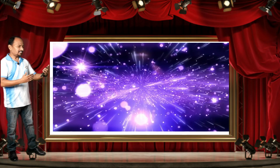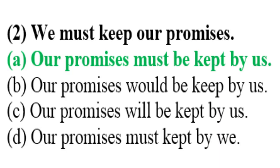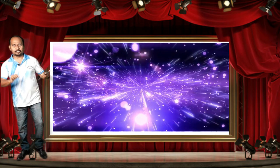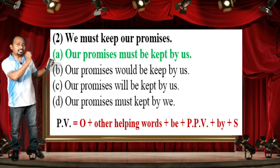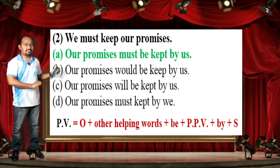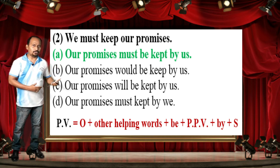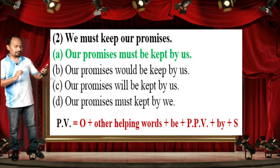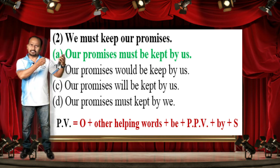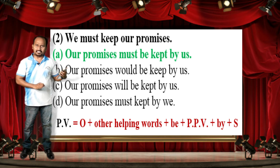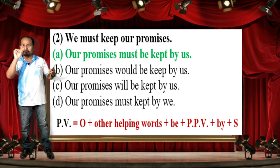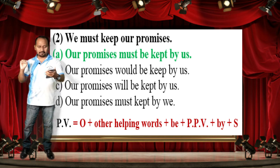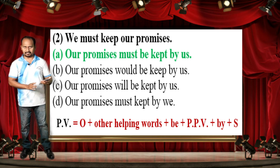The correct answer is: 'Our promises must be kept by us.' The given sentence has the modal auxiliary verb 'must.' When we passivize with a modal, we use the formula: Object + modal verb (must/can/could etc.) + be + past participle (PPB) + by + Subject.